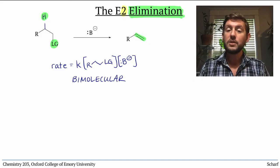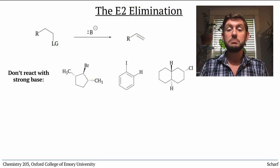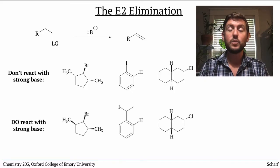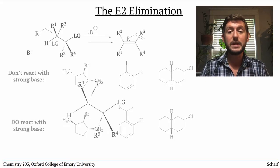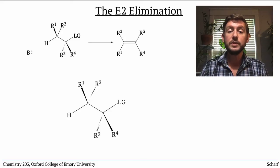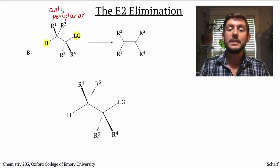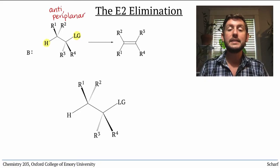But not all compounds with good leaving groups and protons next door undergo this reaction. For instance, these compounds don't react with methoxide, while these do. The E2 elimination has a geometric or spatial requirement: the hydrogen that's being removed and the leaving group must be anti- and periplanar — that is, they must be pointing exactly 180 degrees apart from each other and in the same plane.